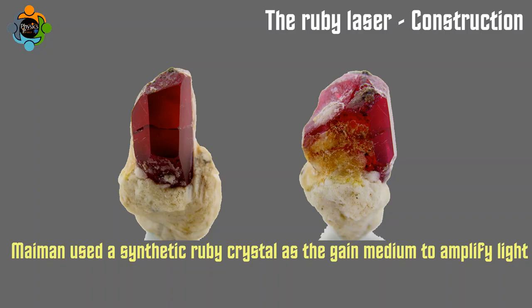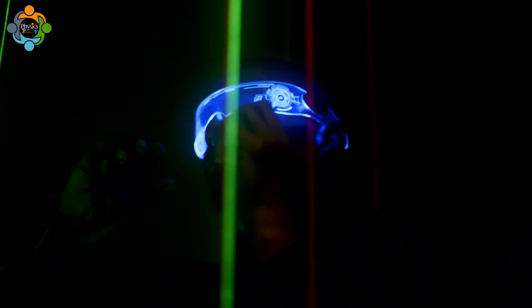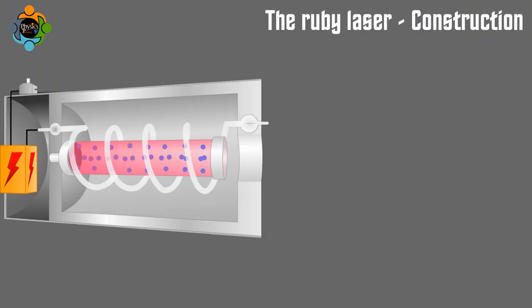Maimon used a synthetic ruby crystal as the gain medium to amplify light. This groundbreaking achievement paved the way for many more advancements in laser technology. The structure of a ruby laser is quite simple yet effective.